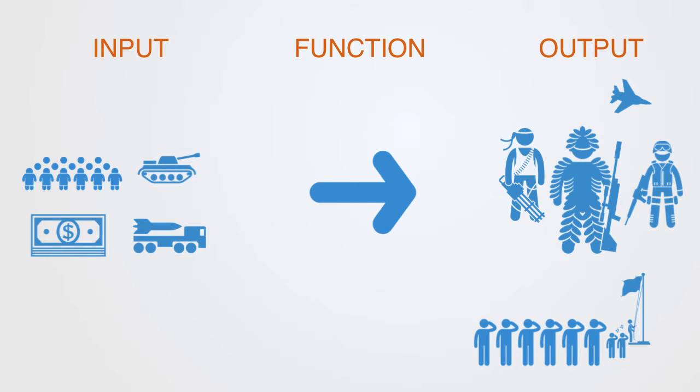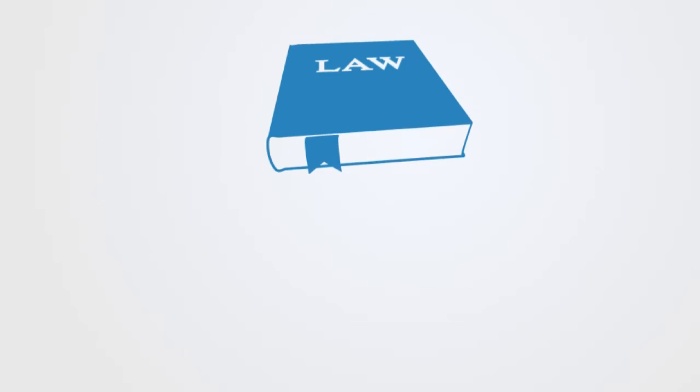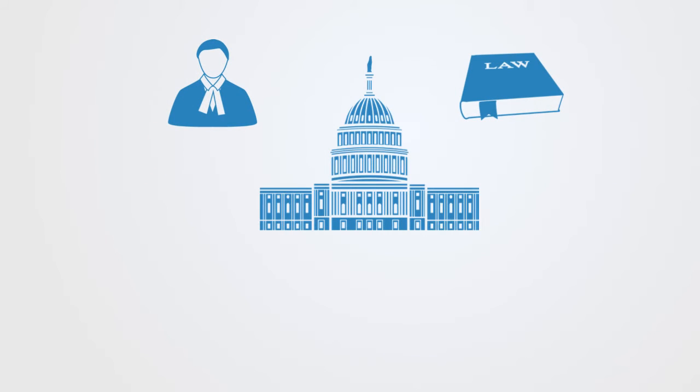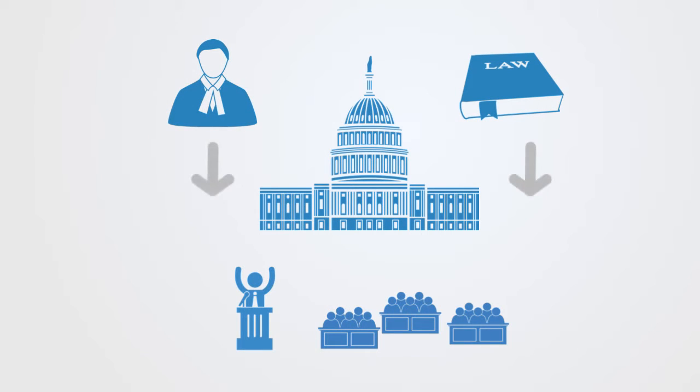In order to do this there needs to be some set of rules that define how the whole process should be performed. Thus formal institutions are typically endowed with a set of instructions as to how this function should be performed. For example, governments have a well-defined set of rules encoded within the constitution and law as to how they should conduct the process of governing a country, how decisions should get made, and what they can and can't do during this process.